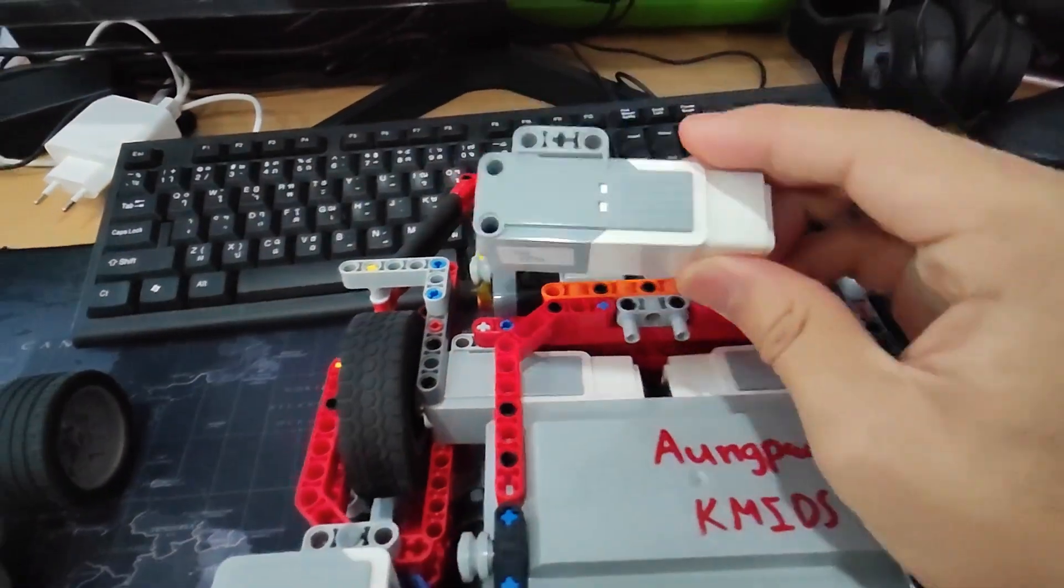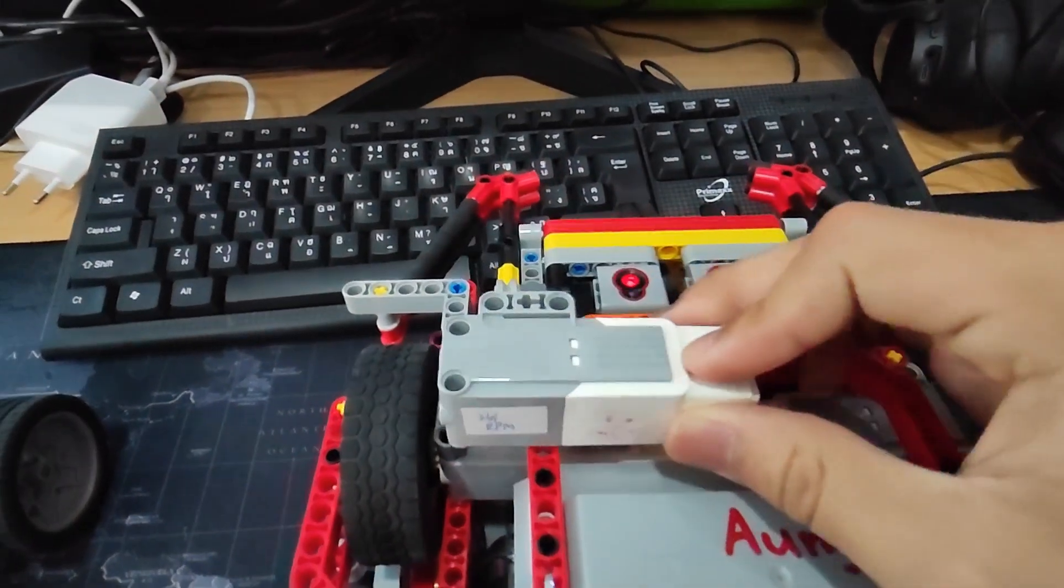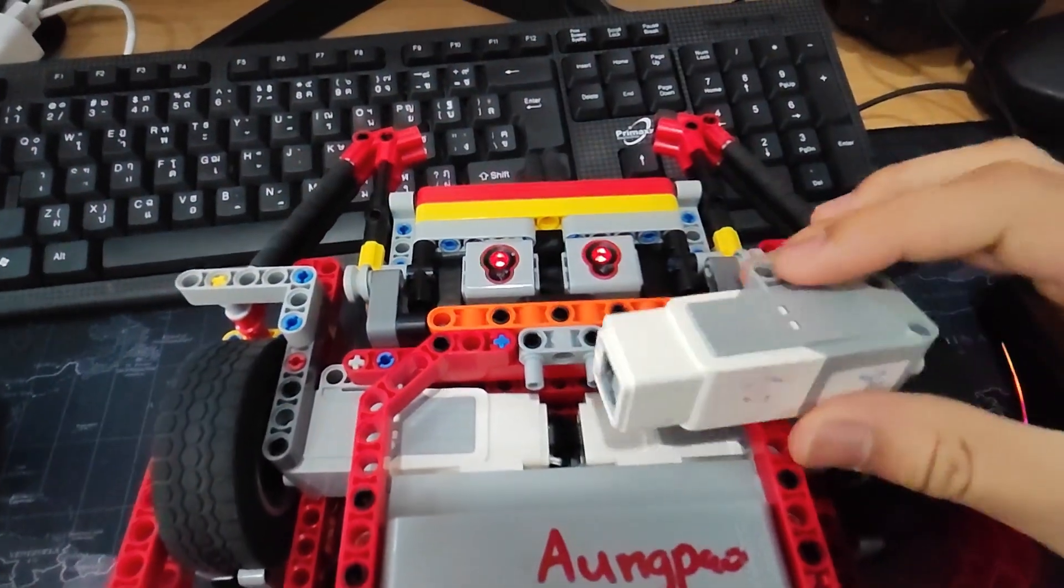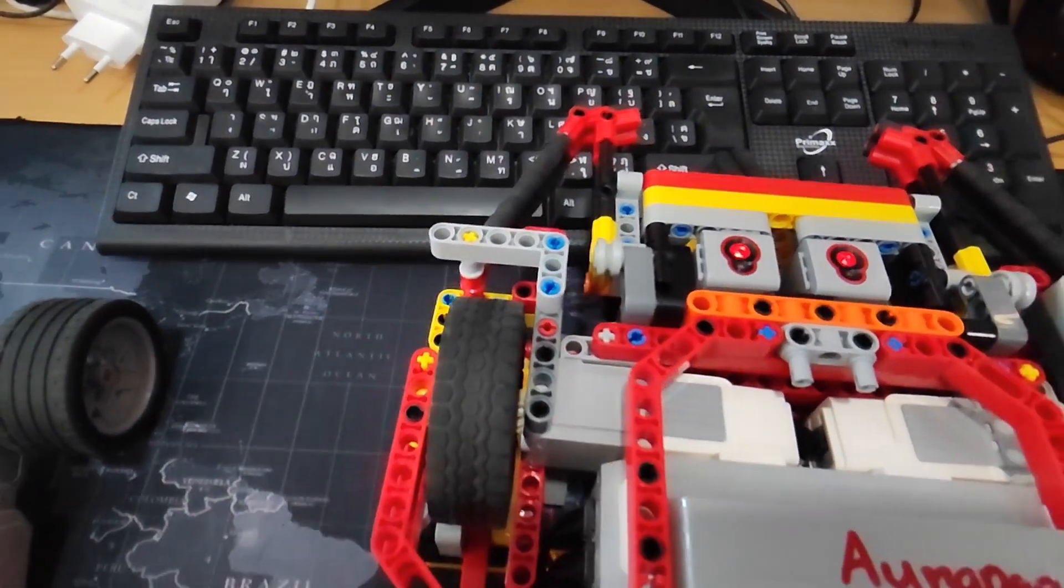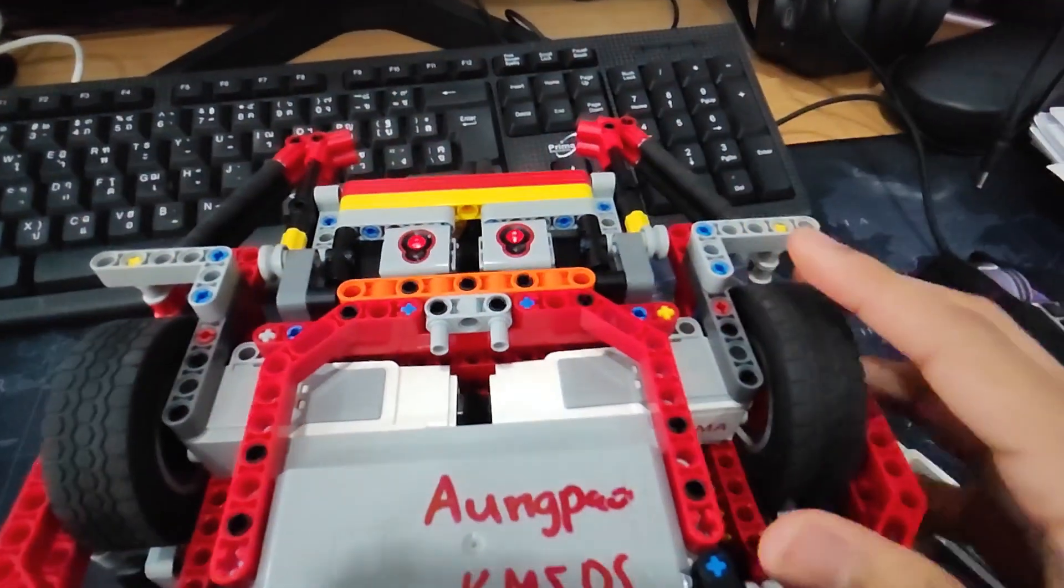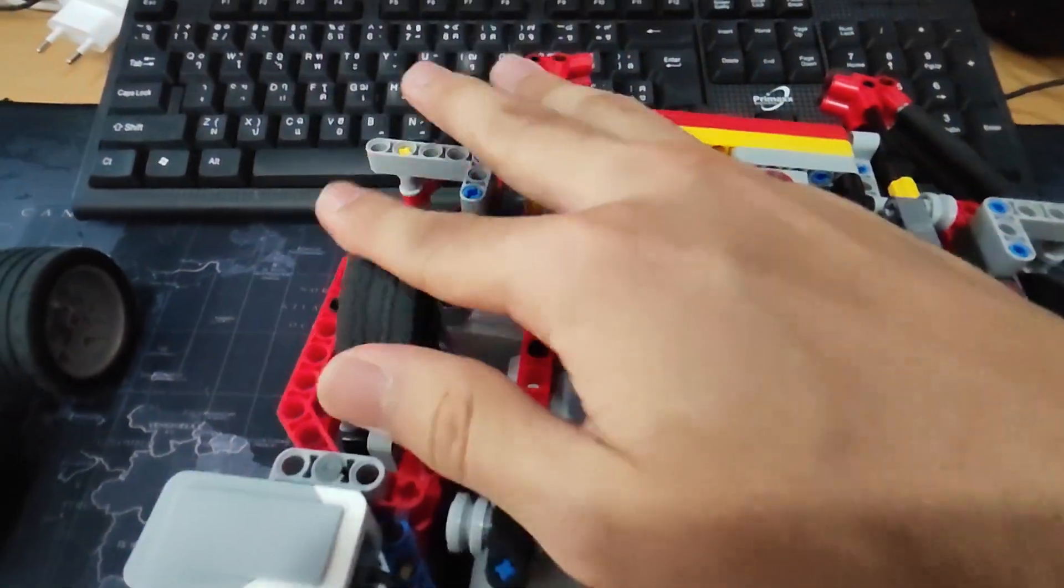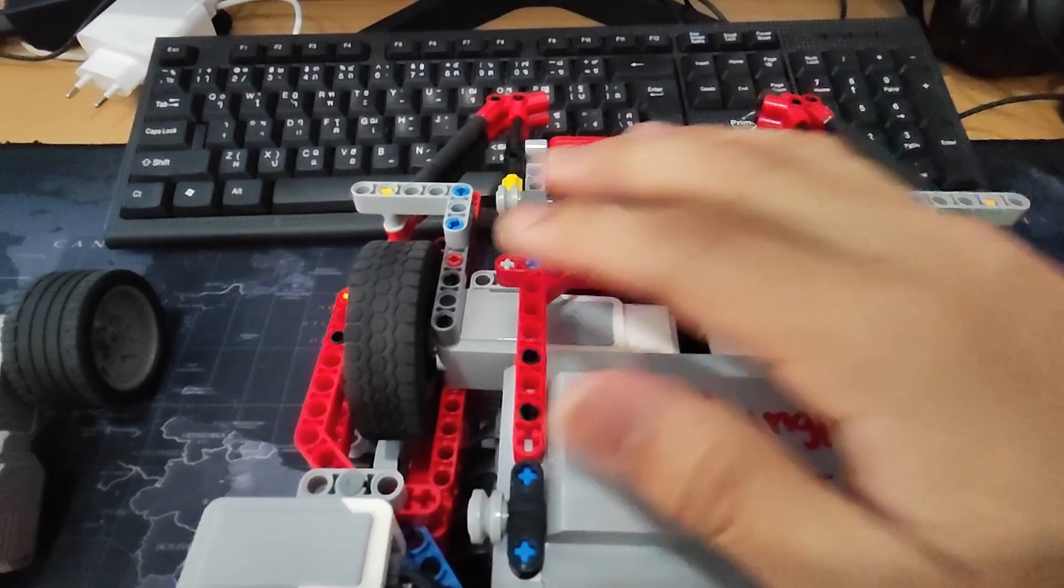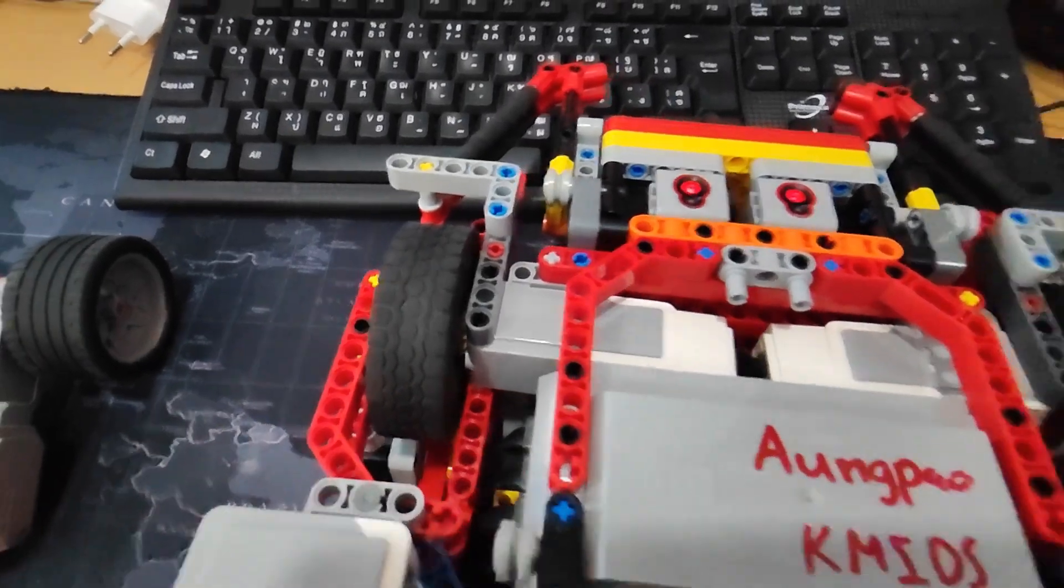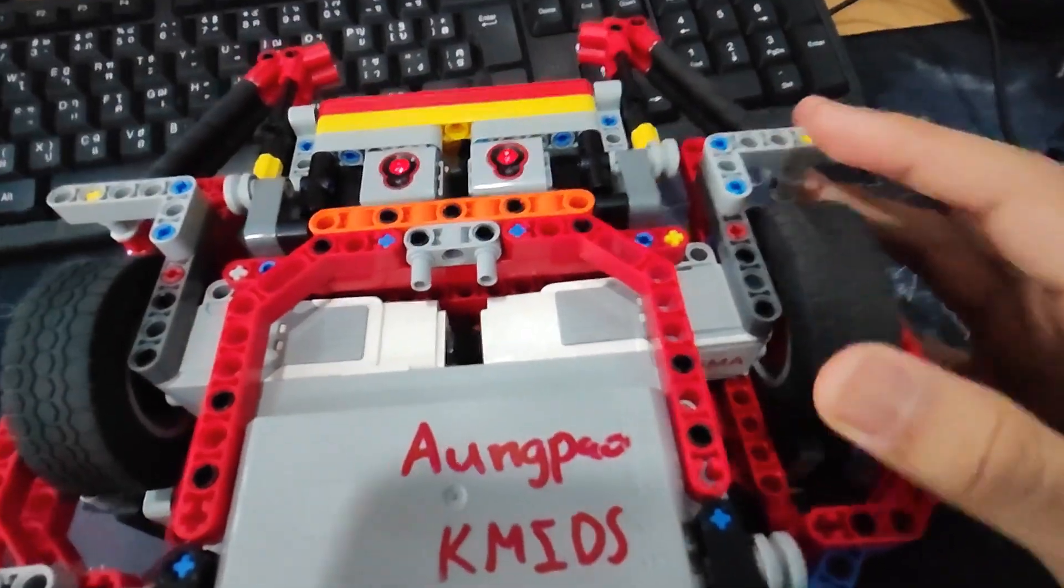But when we are using medium motors to drive, the motors orientation will be inverted, just like this. As you can see, the motors are oriented differently. And which means the motors moving in the same direction will mean this motor moving here, this motor moving like this, which does not make the robot move straight, but rather turn instead. Because the wheels are moving in different directions, so it turns.